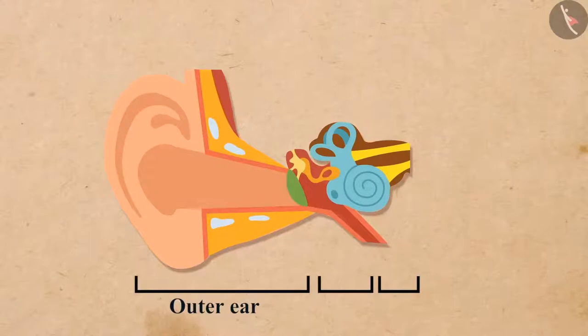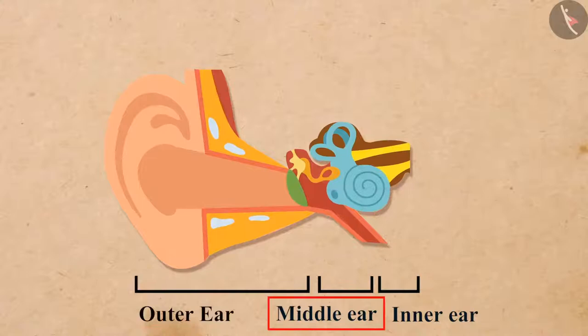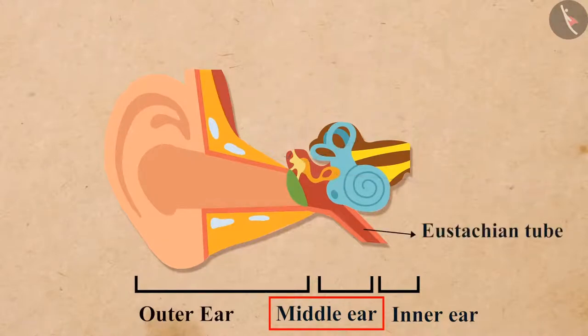The outer ear, the middle ear, and the inner ear. The outer ear includes pinna and the auditory canal. The middle ear mainly includes three bones: the hammer, the anvil, and the stirrup, and the eustachian tube.